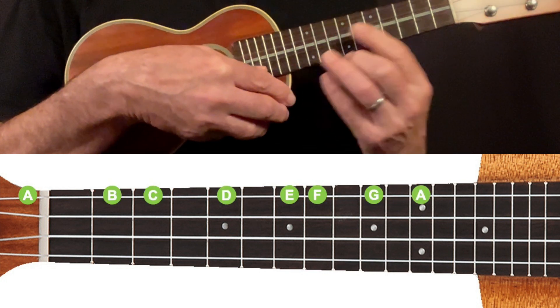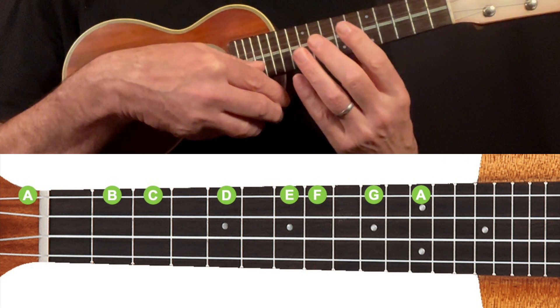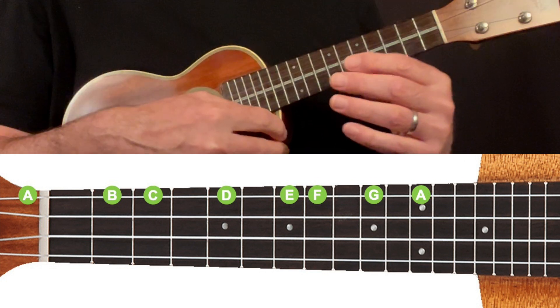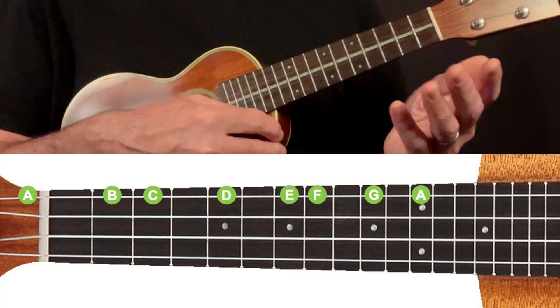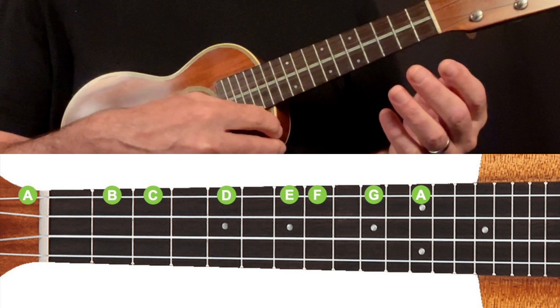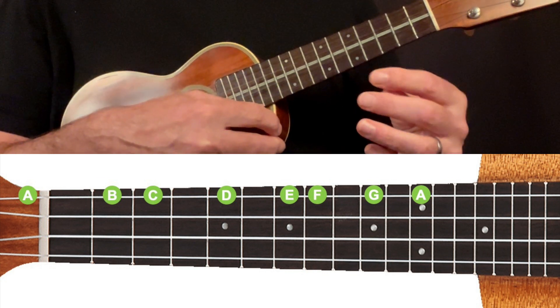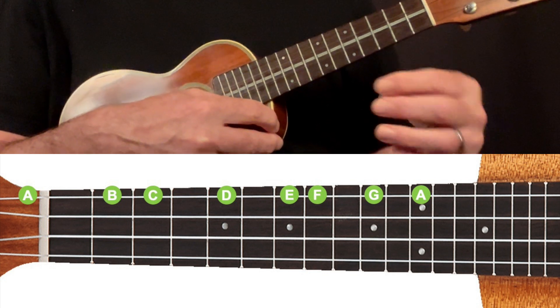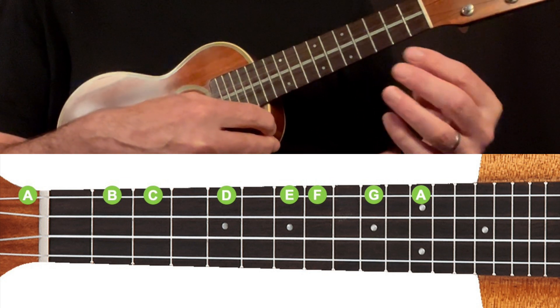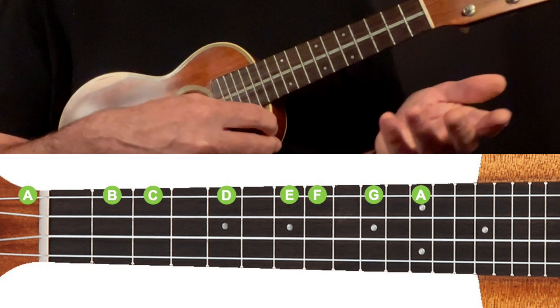Some ukuleles, mainly sopranos, might only have 12 frets, but many have a few more frets available to us. Basically everything starts again from the twelfth fret. So the note at the fourteenth fret would be another B, an octave higher than the one at the second fret, and the note at the fifteenth would be a C, an octave higher than the one at the third fret, and so on.